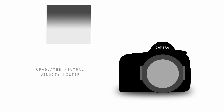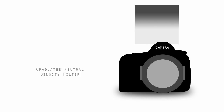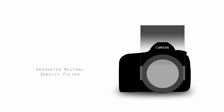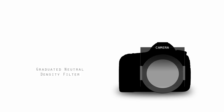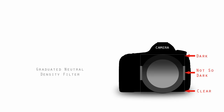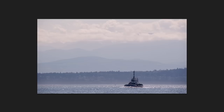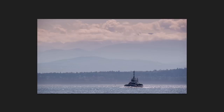Most of us are familiar with a standard graduated neutral density filter. They're dark at the edge of the frame and get lighter and taper off to being clear somewhere in the middle of the frame, which is helpful for darkening skies and that sort of thing.